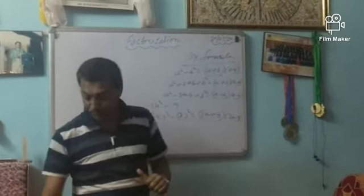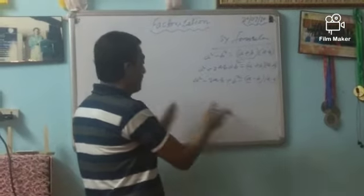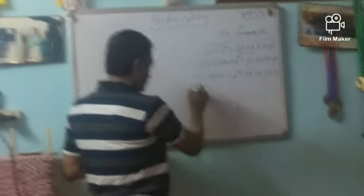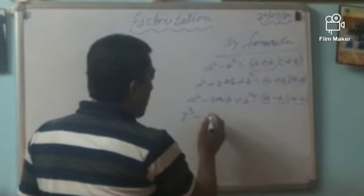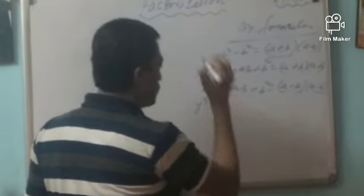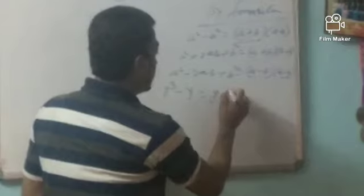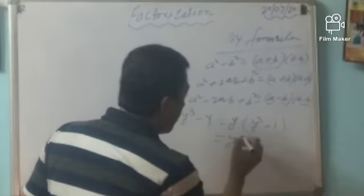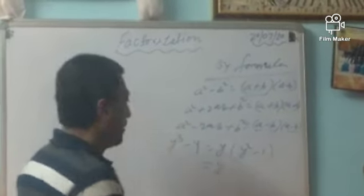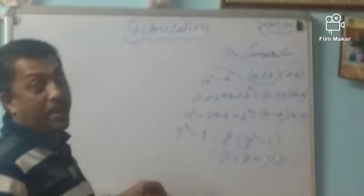Sometimes we take the common factor first and then apply the formula. For example, y³ - y: first take y as common, giving y(y² - 1). Now y² - 1 is in the form of a² - b², where b² = 1² = 1. So it becomes y(y + 1)(y - 1). This is the solution of the algebraic expression y³ - y.